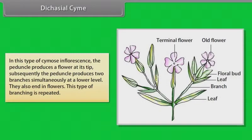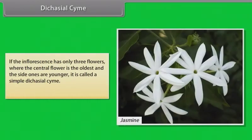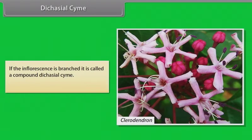In dicasial cyme, the peduncle produces a flower at its tip; subsequently the peduncle produces two branches simultaneously at a lower level, which also end in flowers, and this type of branching is repeated. If the inflorescence has only three flowers where the central flower is the oldest and the side ones are younger, it is called a simple dicasial cyme. Example: Jasmine. If the inflorescence is branched, it is called a compound dicasial cyme. Example: Clerodendron, Rycsia.